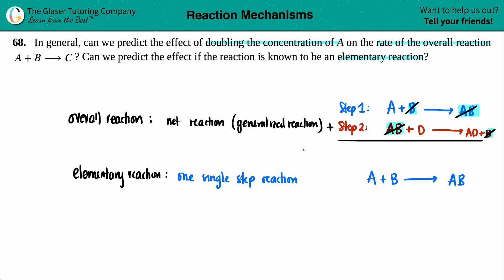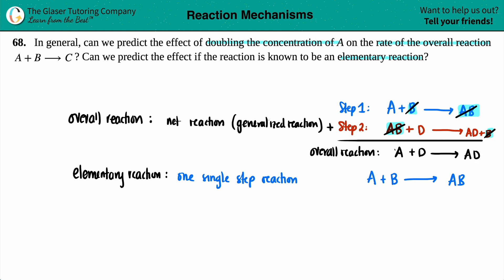So my net reaction, or my overall reaction, would be A plus D yields AD. But by looking at this overall reaction alone, if I don't know those elementary steps, I can't say whether there was one, two, or three elementary steps. That's the key idea — if it's an overall reaction, I don't know how many steps there actually were to get from start to finish.